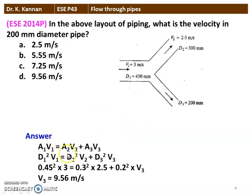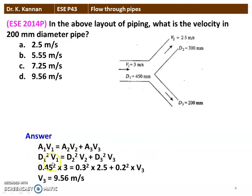Applying the continuity equation: A1V1 = A2V2 + A3V3, since Q1 = Q2 + Q3 (the main pipeline splits into two branches). Cancelling π/4, this simplifies to D1² V1 = D2² V2 + D3² V3. Substituting: 0.45² × 3 = 0.3² × 2.5 + 0.2² × V3. Solving the equation gives V3 equal to 9.56 meters per second. Option D is the correct answer.